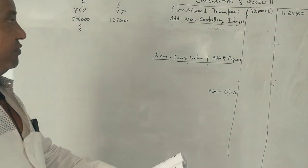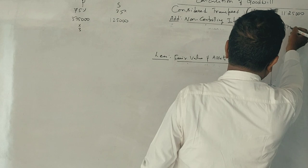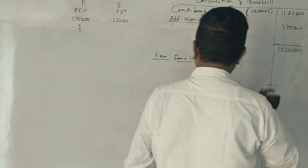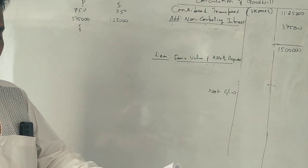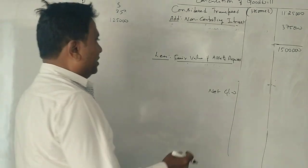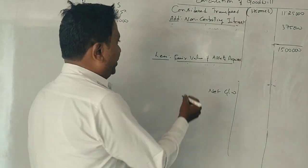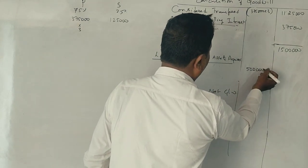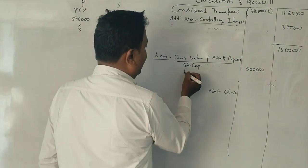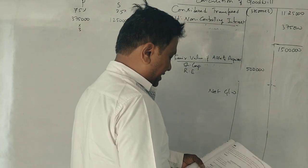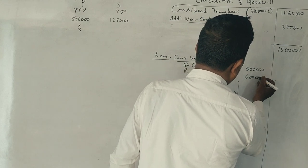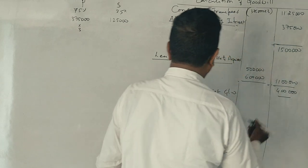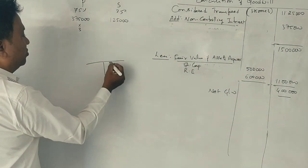The fair value of the non-controlling interest is Rs. 3,75,000. The total is Rs. 15,00,000. Assets include share capital of Rs. 5,00,000 (5 lakh shares at Re. 1 each) and retained earnings of Rs. 6,00,000, totaling Rs. 11,00,000 on the balance sheet.